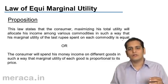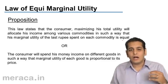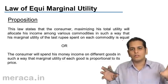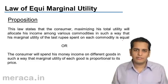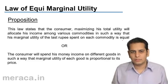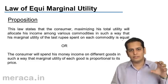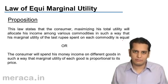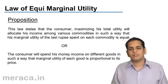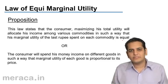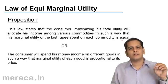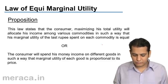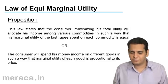In this law, we learn how a consumer allocates his income to all the commodities he has to consume. There will be many commodities that we study. However, for simplicity's sake, we generally take two or three commodities. Now let's understand this law in depth.